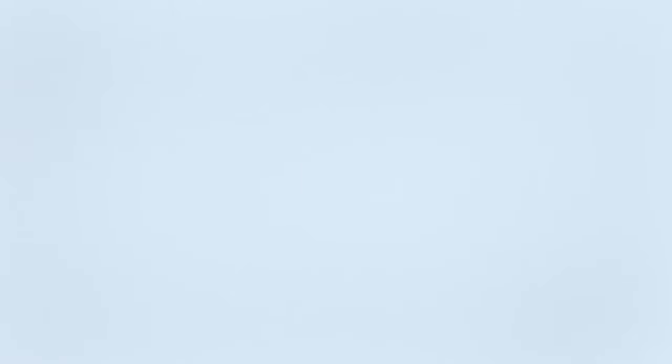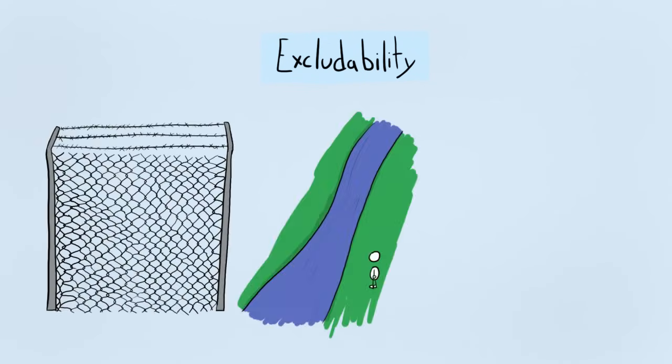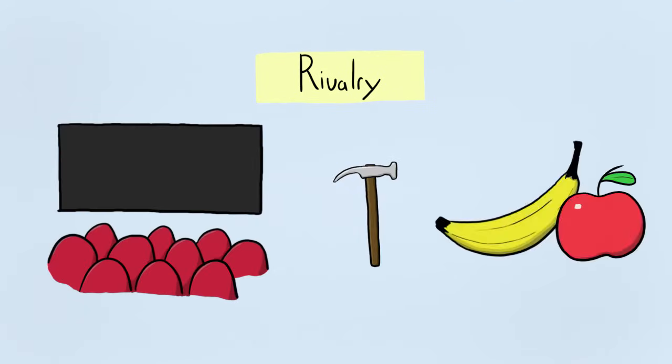So to reiterate, excludability describes how easy or how hard something is to be accessed. Boundaries aren't just physical, they can be social contracts, like laws. Anything that can exclude people. Rivalry describes how expensive it is to supply something to another person, and whether that thing can be shared at the same time, at different times, or not at all.